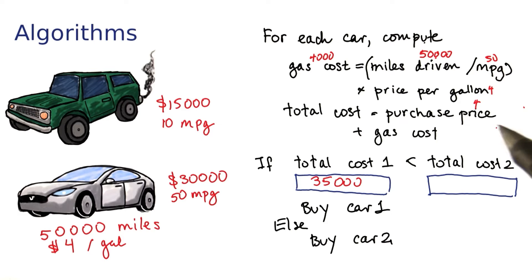The purchase price was $30,000 plus the gas cost of $4,000 gets me to $34,000. Now let's go on with the algorithm. Is total cost 1 less than total cost 2? No, it's not. $35,000 is bigger than $34,000. So the algorithm tells us to buy car 2.